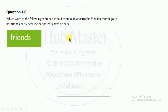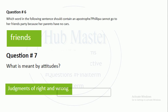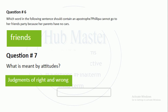What is meant by attitudes? If we look at this, attitudes are judgments of right and wrong. We mostly use this word in life — we say 'that is a big attitude.' We judge whether something is right or wrong — these are our attitudes.